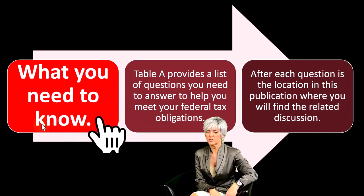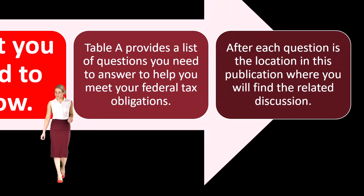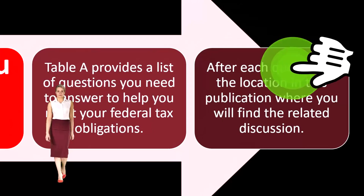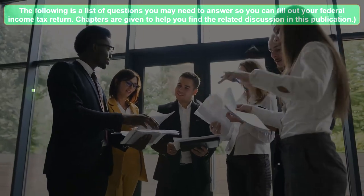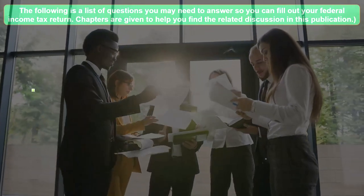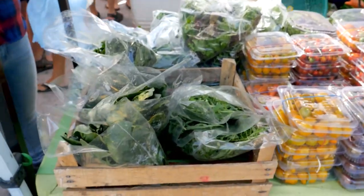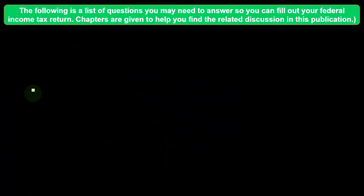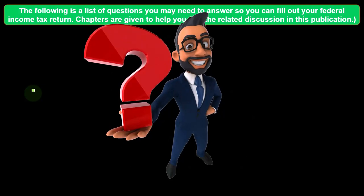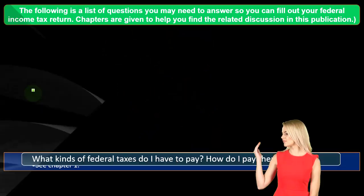Table A provides a list of questions you need to answer to help you meet your federal tax obligations. After each question is the location in this publication where you will find the related discussion. These are concepts that often come up when people think about reporting their sole proprietor business, and you can go through the publication to find more information about any one of them.